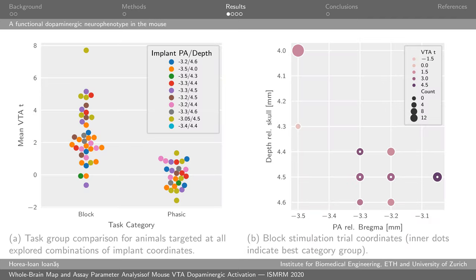The first part of our results looks at the parameters of the assay, in which we observe that block stimulation elicits much better activation of the VTA as opposed to phasic stimulation. Both of these are relevant for dopaminergic function, yet there are many reasons — including sensitivity in fMRI — which make block stimulation the preferable approach. We have also determined the best group of coordinates via k-means clustering of the quantitative targets for the implantation, and we have determined that the best implant sites are those highlighted with a dot in the figure on the right-hand side.